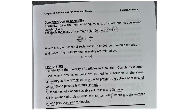Blood plasma is 0.308 osmolar. A 1-molar solution of a non-dissociable solute is also 1 osmolar. A 1-molar solution of a dissociable solute is N osmolar, where N is the number of ions produced per molecule upon dissociation.